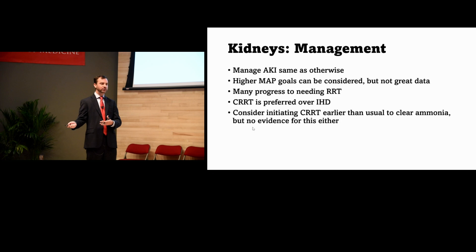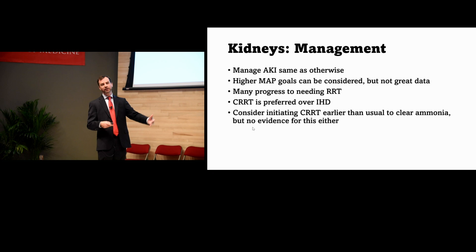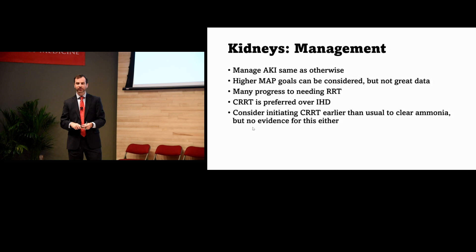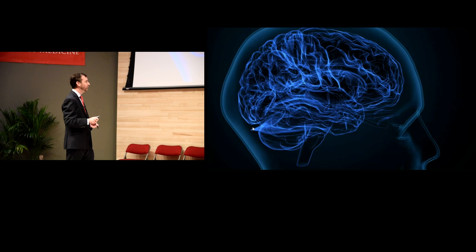There's also argument for considering CRRT earlier than usual to help clear ammonia and other osmoles from the hepatic encephalopathy picture, though again the data isn't great. If you do need renal replacement therapy, this is not the patient for intermittent hemodialysis — if they're in acute liver failure, go with CRRT. Admit them to the ICU and get them started on continuous renal replacement therapy.